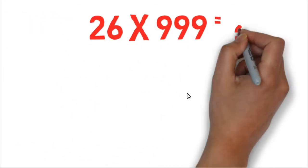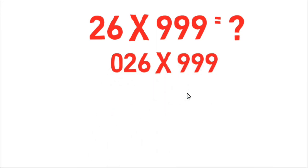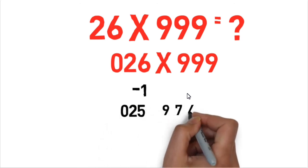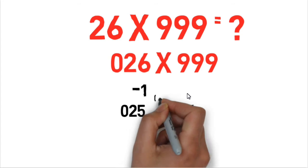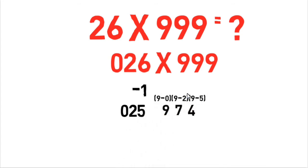So now one more example where left side digits are less than the right side digits. So we'll equalize like 026 by 999. Same formula we'll apply: 026 minus 1 equals 025, and rest of the digits 9 minus 0, 9 minus 2, 9 minus 5. So the answer will be 25,974.